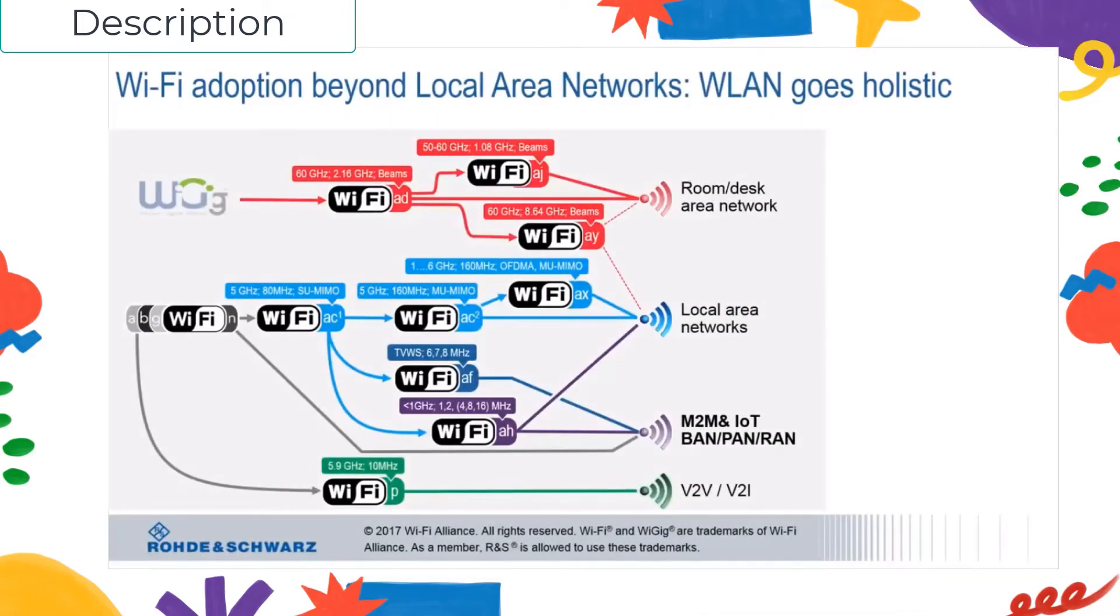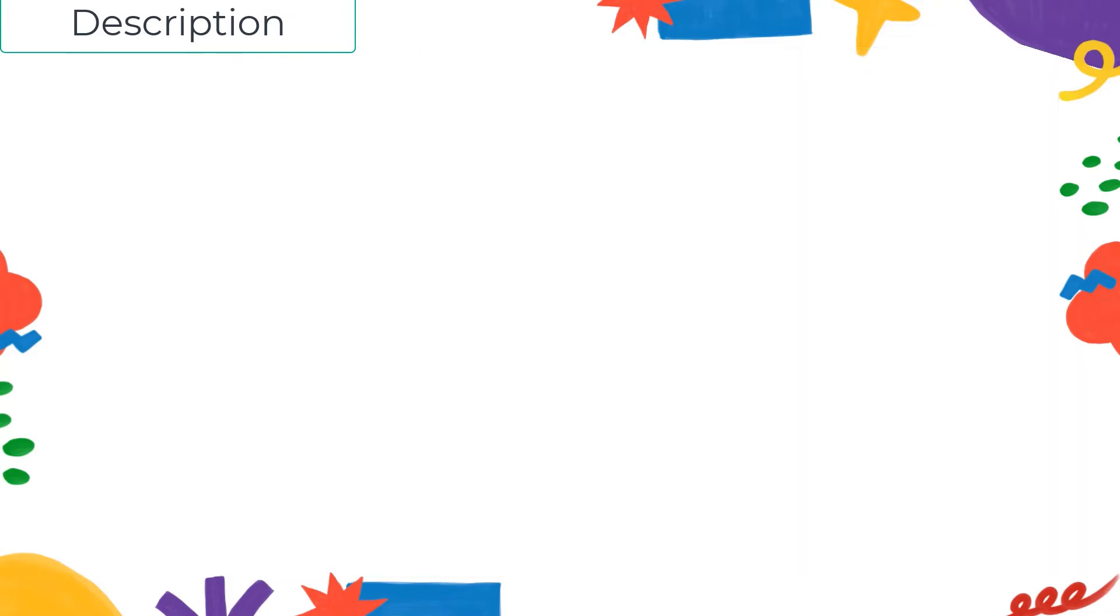In this course, called OFDM for Beginners, we explain in detail the main concept of OFDM which is a key transmission method used in 4G LTE, 5G, Wi-Fi, WiMAX, WiGIG, Li-Fi, DVB, VADSL, and Optics.